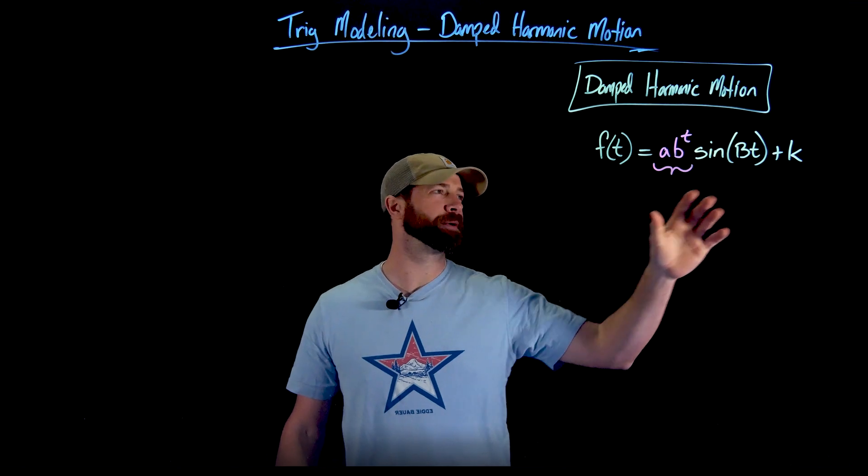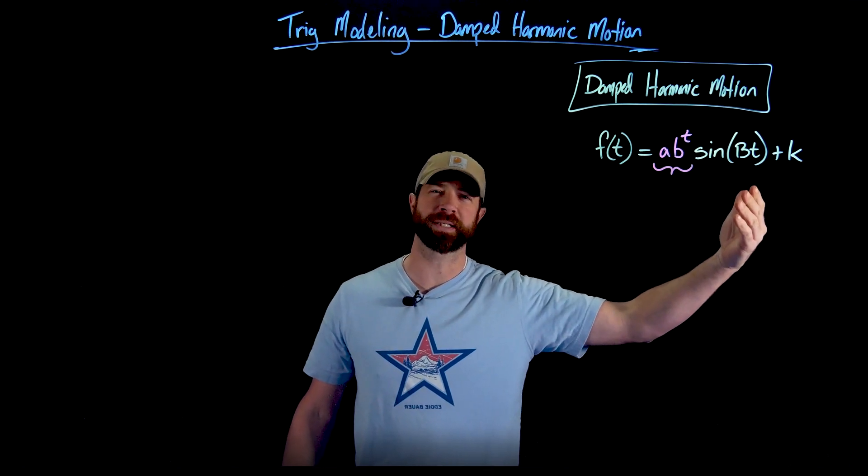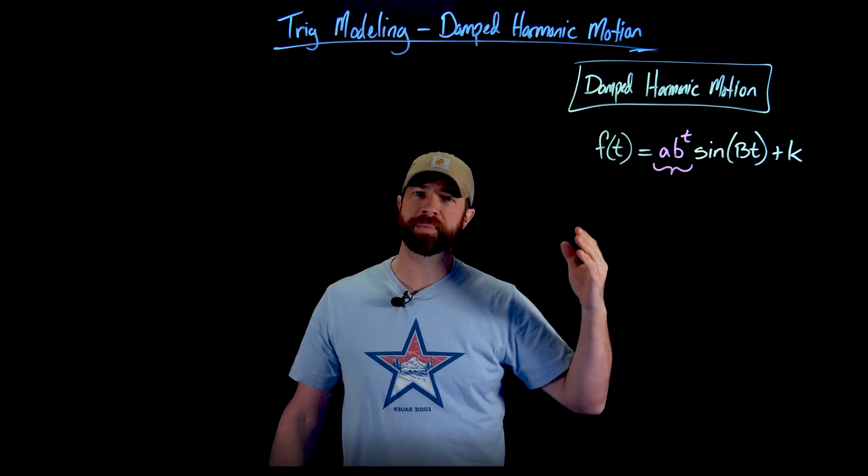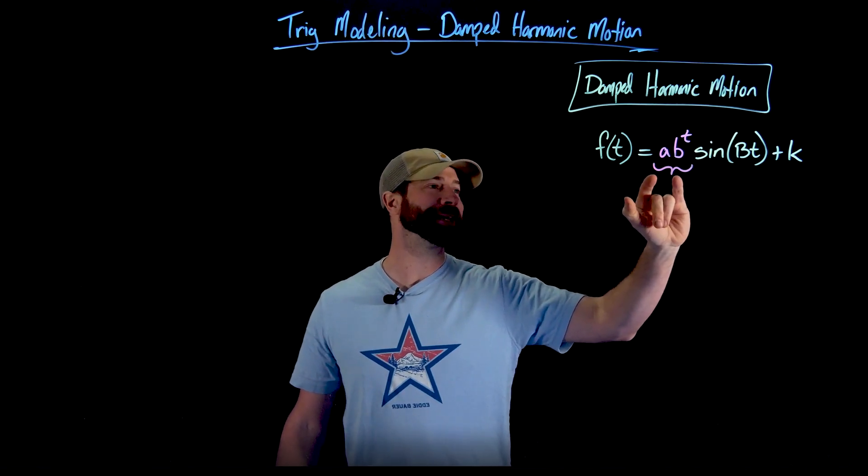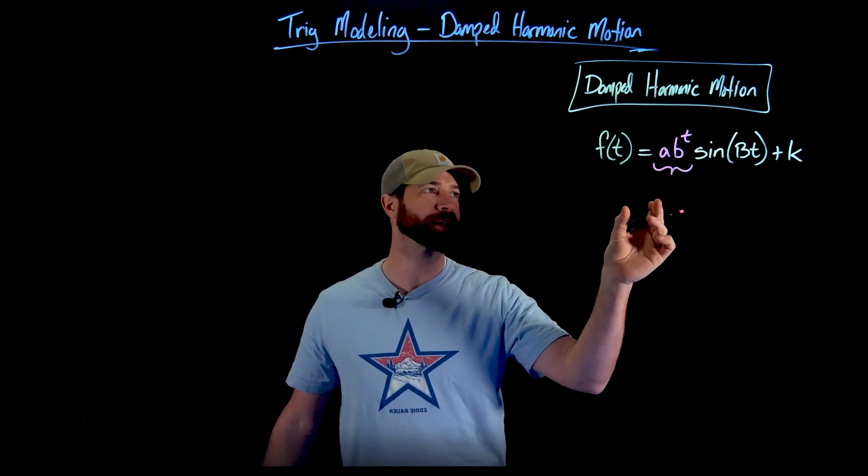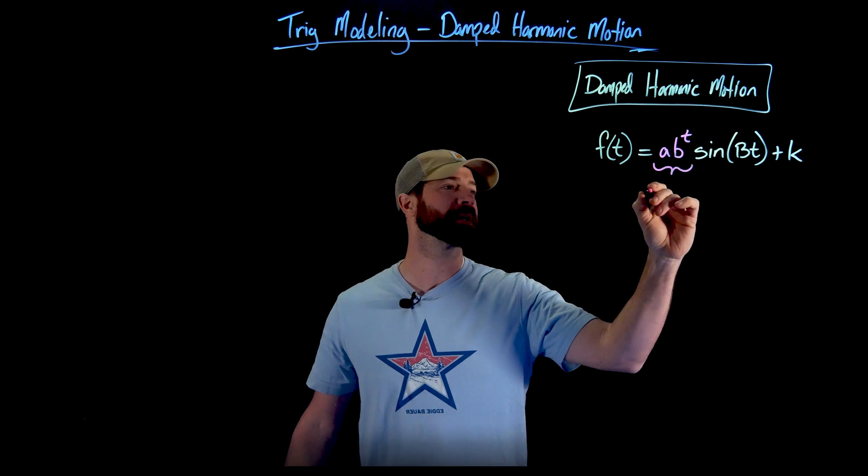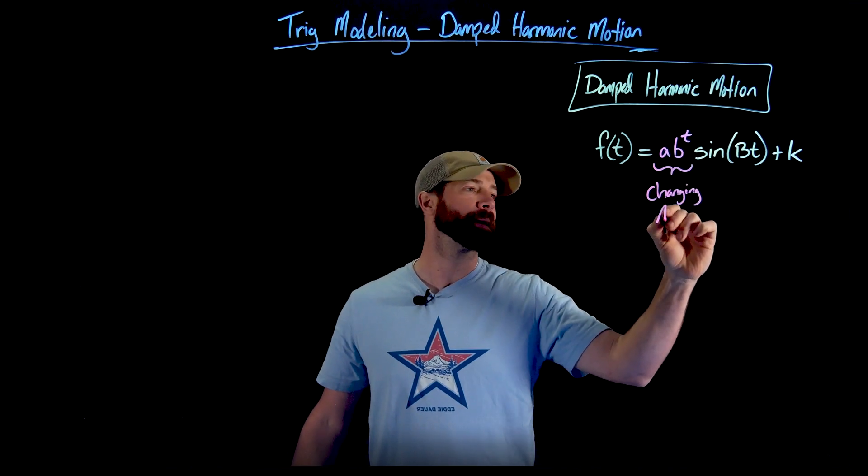Importantly here, when we're looking at this formula we have a constant midline as this plus K. We can think of that as our plus D also. We have some kind of period change right here, but we also importantly have this changing amplitude. So this exponential expression put in front of the sine right here is where we get some changing of our amplitude.